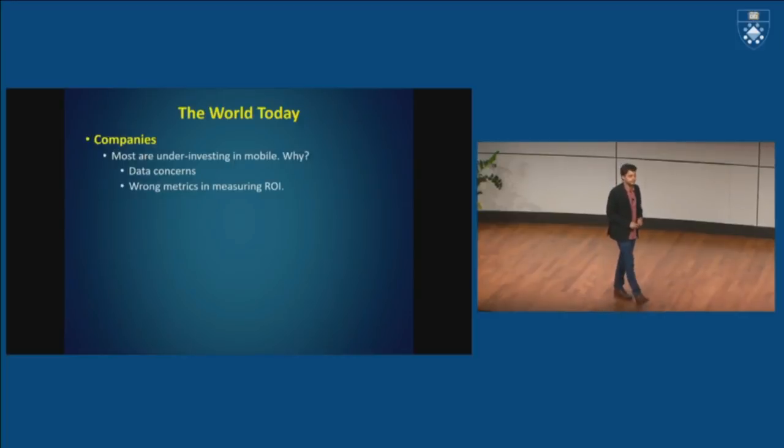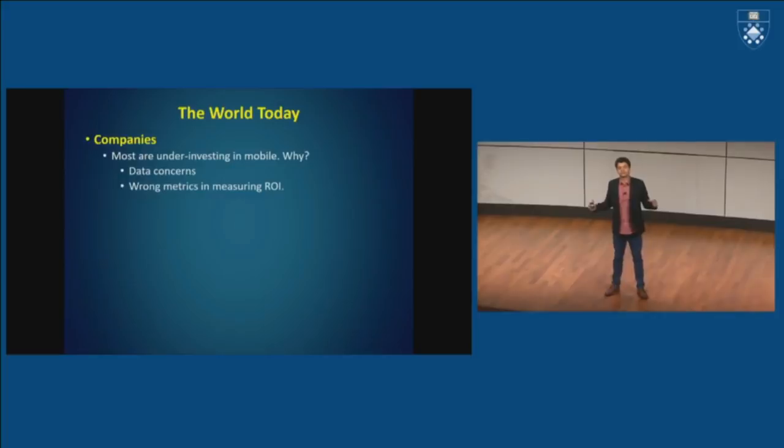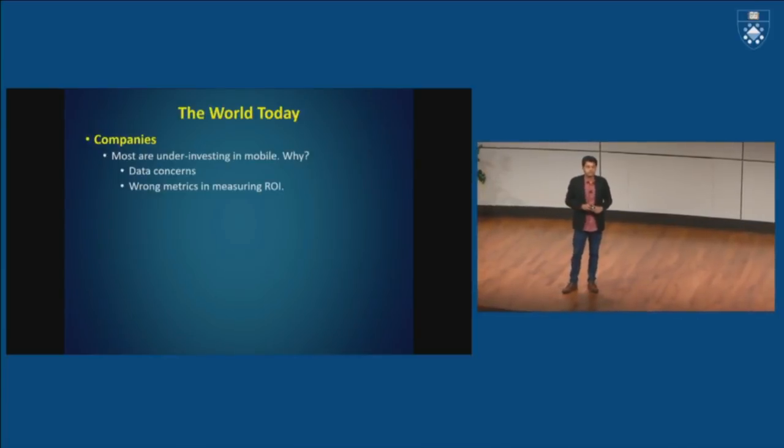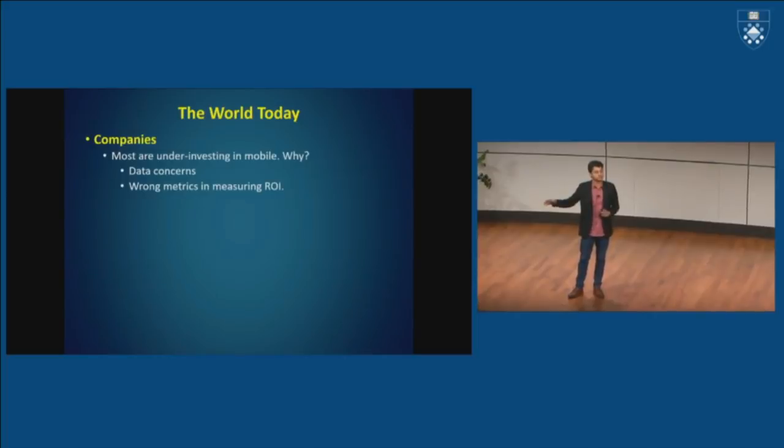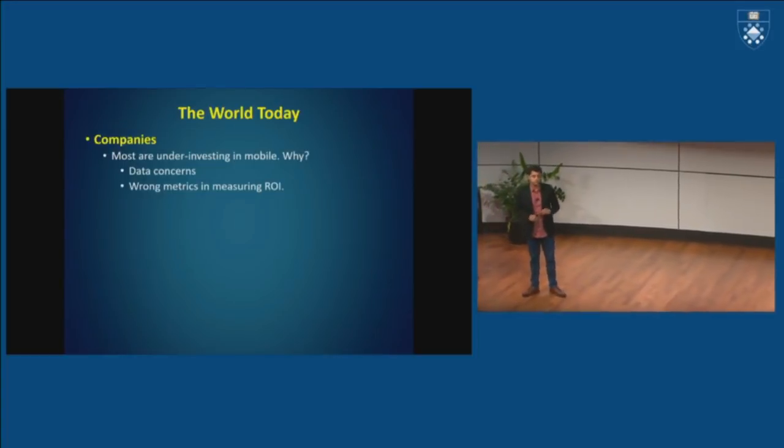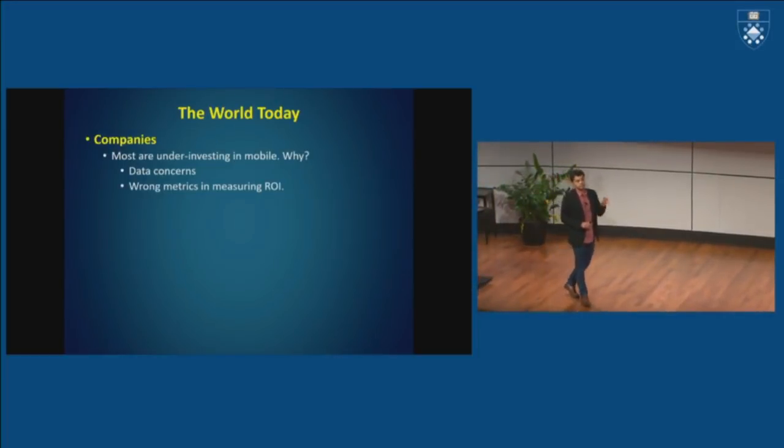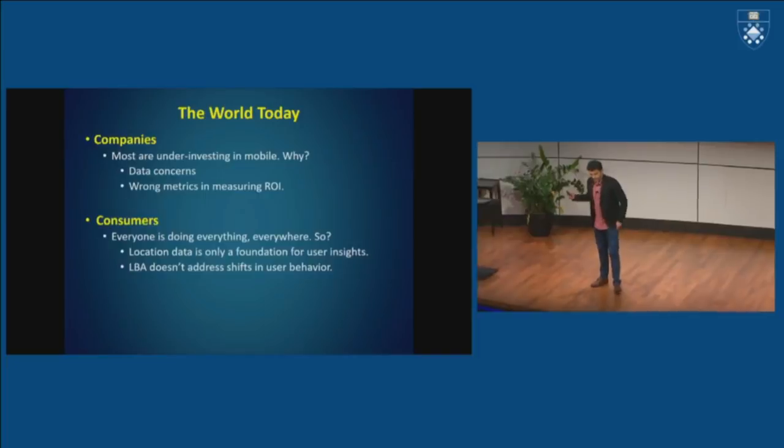Because you should not be looking at conversions or the last touchpoint as the most important metric. You should follow the entire path to purchase, right? And so the first speaker, Bridget, talked about this pretty convoluted path to purchase. And you'll see that for many brands, mobile fits right there in the middle or at the beginning. So if you're only looking at the last touchpoint, that's not the right metric. We've investigated this sort of attribution analysis across both online and offline. It turns out that mobile can be as much as 35 to 40% of all your transactions if you look at the source of influence.